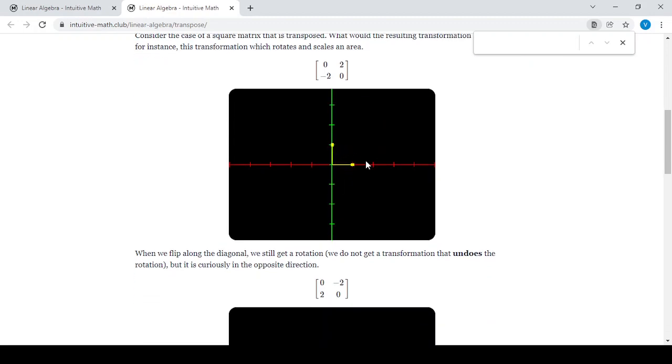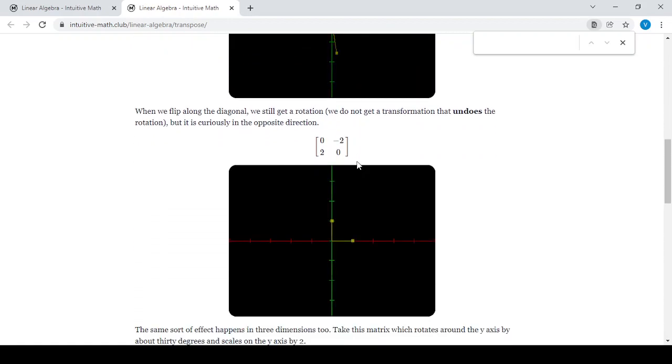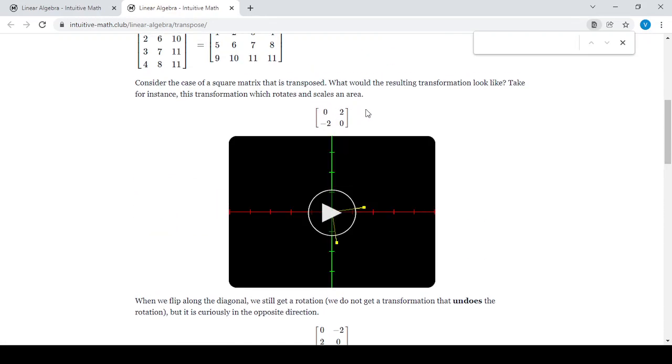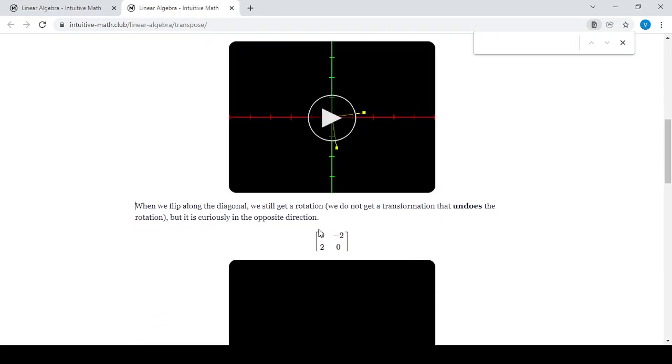But if I were to go in the opposite direction where I have to do anticlockwise rotation on the same input matrix and scale it by two, I'm going to use this matrix which is the exact transpose. The rows and columns are interchanged.